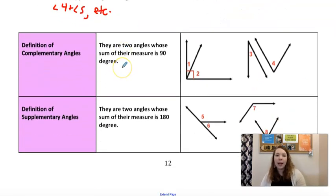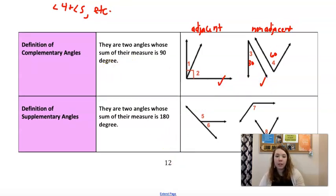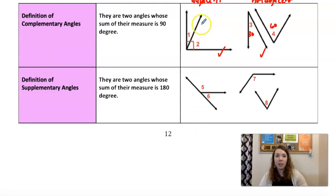Complementary angles are angles that add to 90 degrees. And they can be both of these. So this is an adjacent angle that adds to 90. But even these two, like let's say this one is 30 and this one is 60. They're still complementary. They're just not adjacent. Okay, but they're still both complementary. Supplementary is very similar, but they add to 180. So same thing. These are adjacent. These are non-adjacent, but still supplementary. All right, so next page.